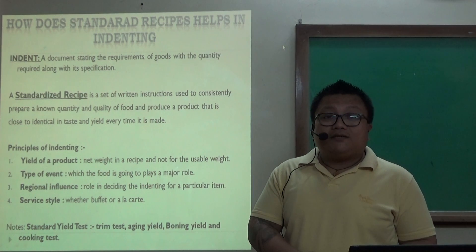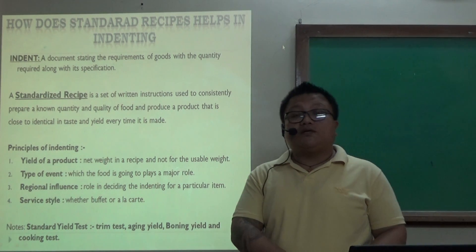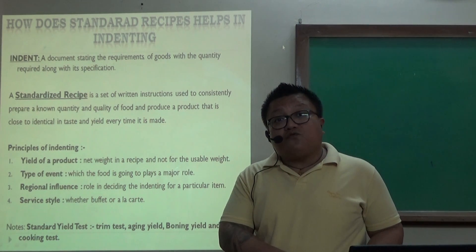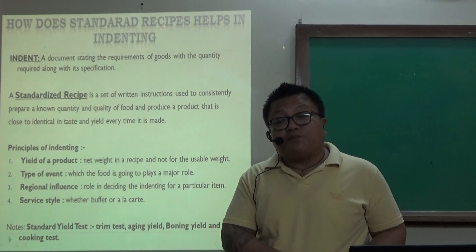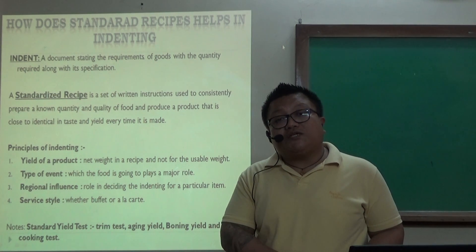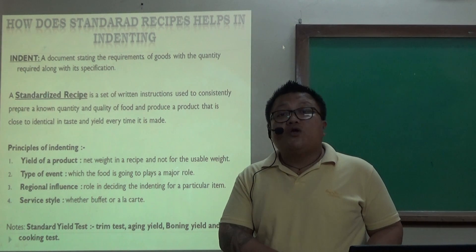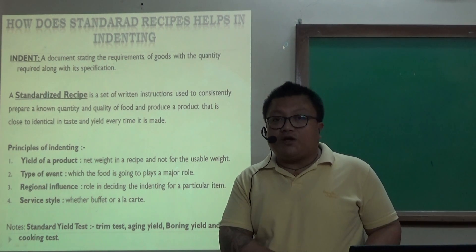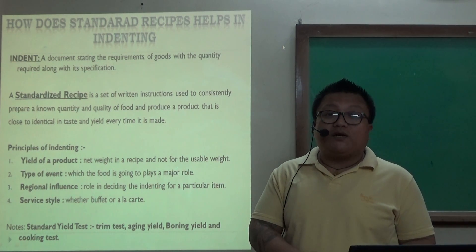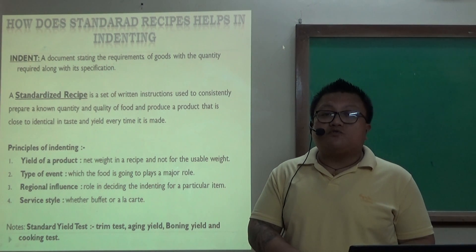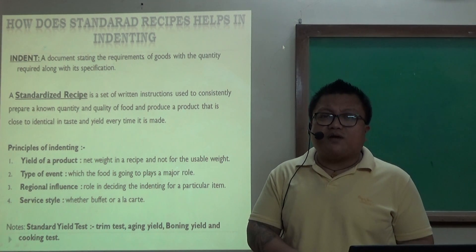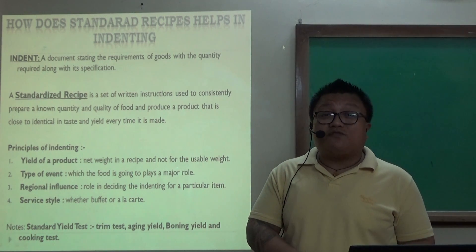In a buffet-style event, more food is prepared but in lesser individual quantities, because every single person tends to taste every food item — a spoon here and there — which adds up. So the quantity per food item has to be adjusted accordingly. For a birthday party, you might think of fancy or figure foods, whereas for a marriage reception, food has to be something different as per the client's requirement.